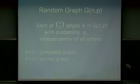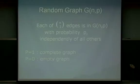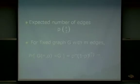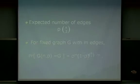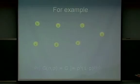In the case P equals one, this becomes a complete graph. In the case P equals zero, this becomes empty. The expected number of edges — because there are N-choose-2 trials and each belongs to G(N,P) — has expectation P times N-choose-2. For a fixed graph G with M edges, the probability our random graph equals that fixed graph is P^M times (1-P)^(N-choose-2 minus M).